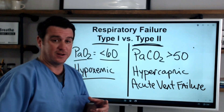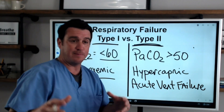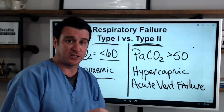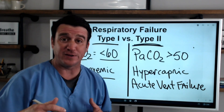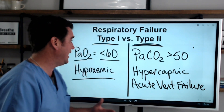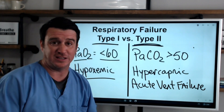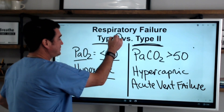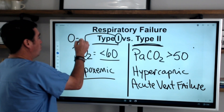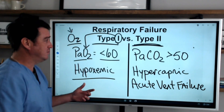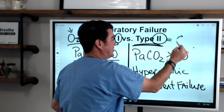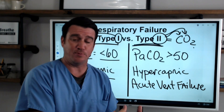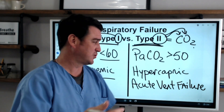Type one relates to oxygen; type two relates to CO2. They mean different things, and when we tell somebody your patient presents with respiratory failure, you need to specify which type. Here's how to remember: type one is talking about O2 — there's only one letter in O2. Type two refers to CO2 — there are two letters in CO2. That's an easy way to remember type one versus type two respiratory failure.